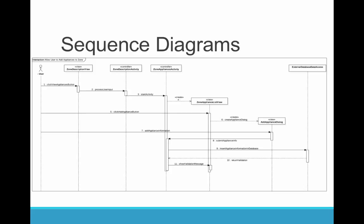The first sequence diagram depicts an interaction of allowing the user to add appliances to a zone. The interaction begins when the user arrives at the Zone Description view that contains a menu item Appliance button. The user clicks on that button, which leads the controller of the zone description to communicate with the zone appliance activity, starting the activity. The zone appliance activity then creates a zone appliance view containing a list of appliances in their respective zone. The user can click the Add Appliance menu button, which launches an Add Appliance dialog where the user may enter the attributes of the new appliance. Upon clicking the Add button, the zone appliance activity controller will query and update the external database. If the query and update is successful, the user will be notified.